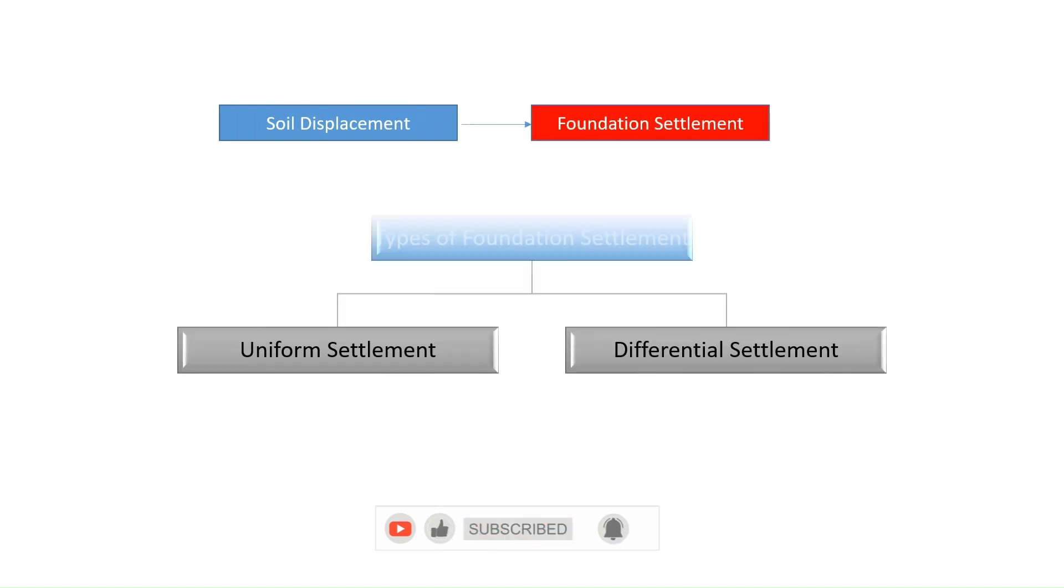Types of foundation settlement. The displacement of the soil leads to foundation settlement. The downward vertical settlement of the foundation can be uniform or differential. Hence, before understanding the causes of foundation settlement and going for a repair, we need to understand that there are two types of foundation settlement expected: number one is uniform foundation settlement, number two is differential foundation settlement.